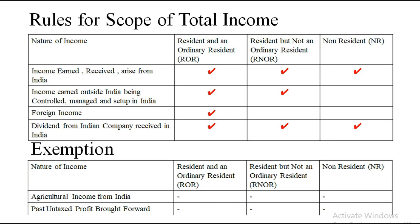If income is earned outside India but it has been controlled, managed, and set up in India — those are the three important terms to keep in mind: control, manage, and set up in India — the first two categories have to pay the tax. And if it is a foreign income, only the first person — that is, only the resident and ordinary resident — needs to pay the tax. So three rules: income arising in India, everyone pays; controlled from India, first two people; foreign income, first person only.